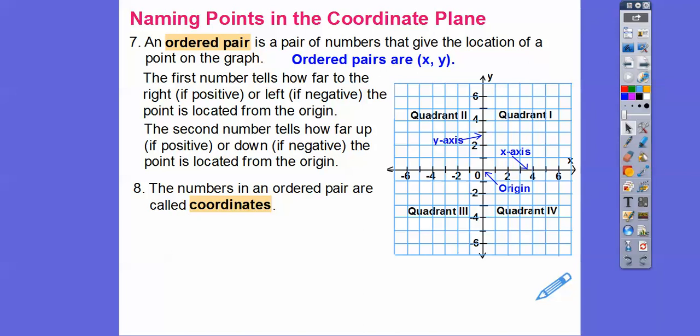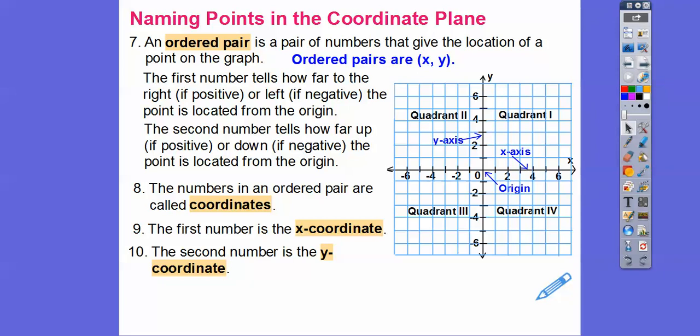The numbers in the ordered pair are called the coordinates. The first number is the X coordinate and the second number is called the Y coordinate.